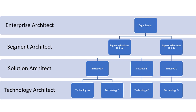To summarize what we've learned in this video: an enterprise architect is someone who has the organization or enterprise in mind when they create their work products. A segment architect is very much focused on their own segment, which could be referred to as a business unit or program. Solution architects are the people who have visibility into one or a few initiatives of a given segment, but they do not have hands-on knowledge of a given technology — for that, they use the experience of the technology architect.